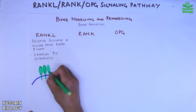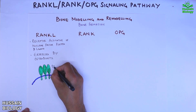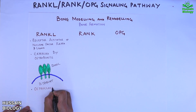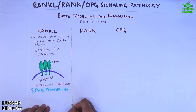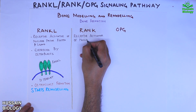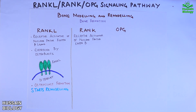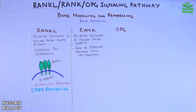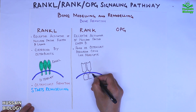In this diagram we can see the membrane of the osteoblast expressing a trimer of RANKL proteins. This RANKL is the ligand that will bind towards its receptor. RANK — Receptor Activator of Nuclear Factor Kappa B — is expressed by osteoclast precursor cells like monocytes.